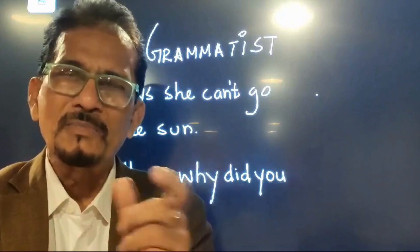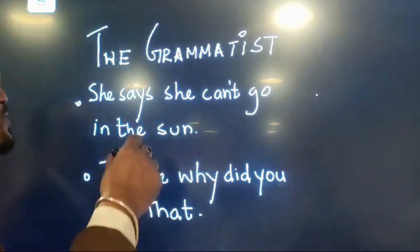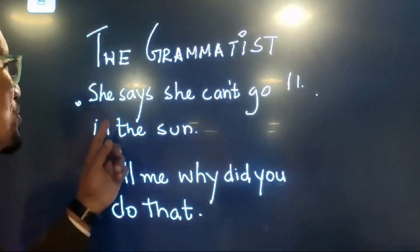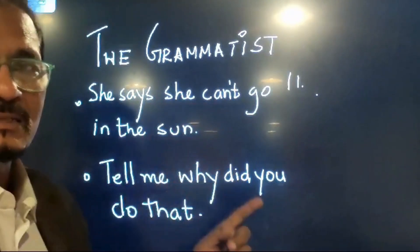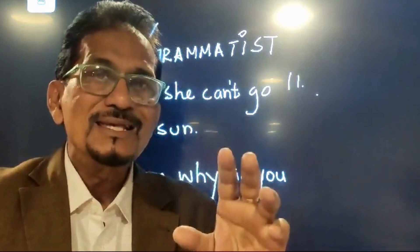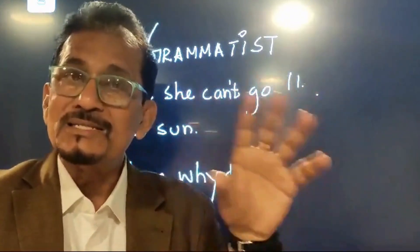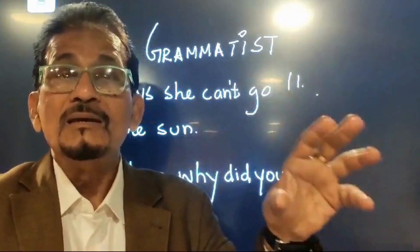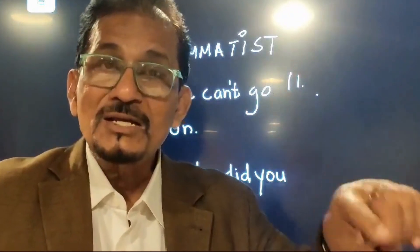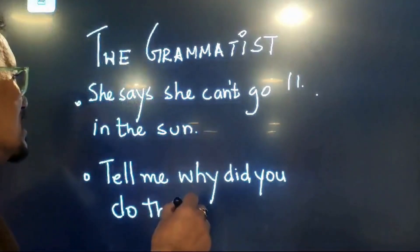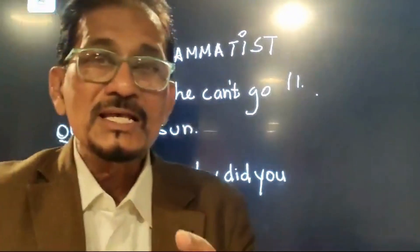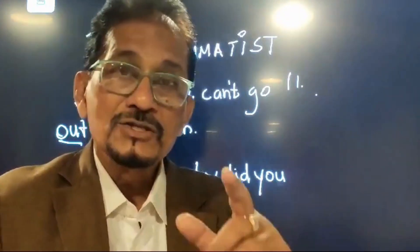Continuing with The Grammatist — this is question number 11, and it's an impressive one. It says: 'She can't go in the sun.' This is again that vernacular blooper. In Hindi if you say this it simply means she can't go outside. The correction would be: 'She can't go out in the sun.' That is the correction.